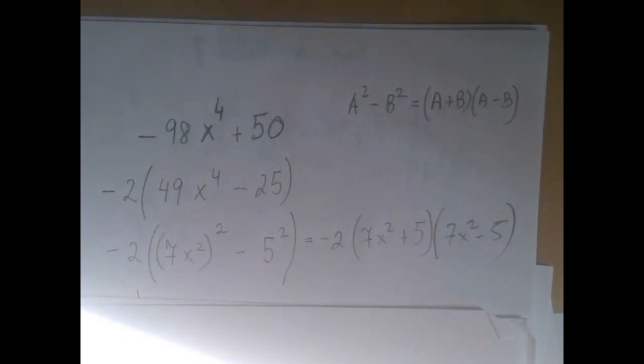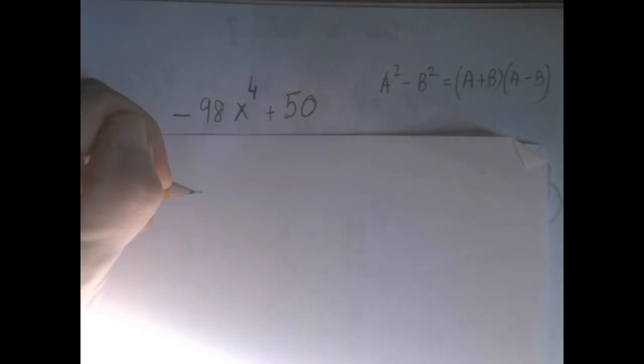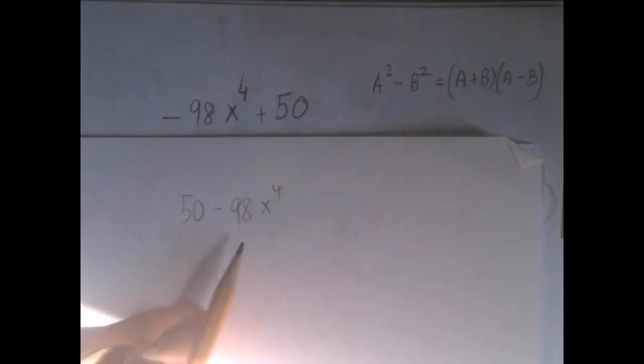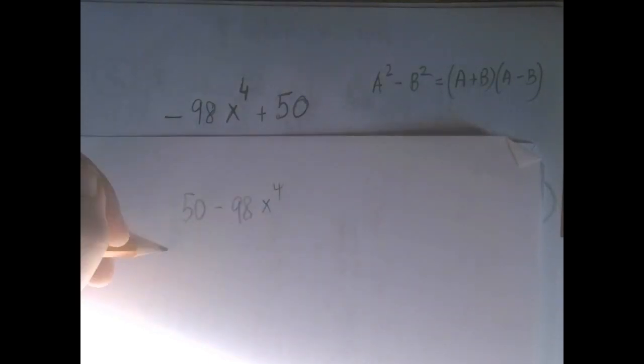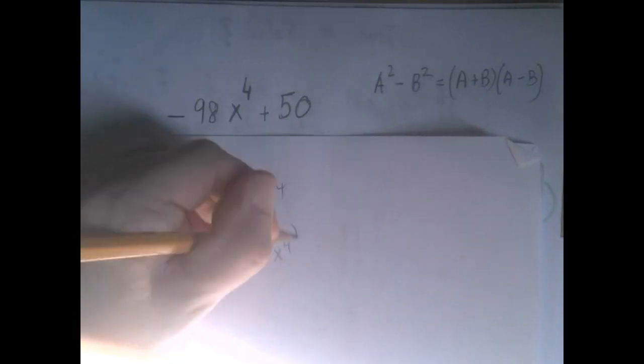This is one way. Another way to solve this is by swapping them. Because it should be clear that we have a difference of two squares. So now that we swap them, this is more familiar as a difference, as a subtraction. And now when we factor out 2, we're going to get 25, a square, minus 49x to the fourth, also a square.